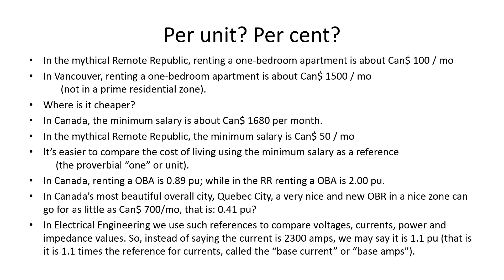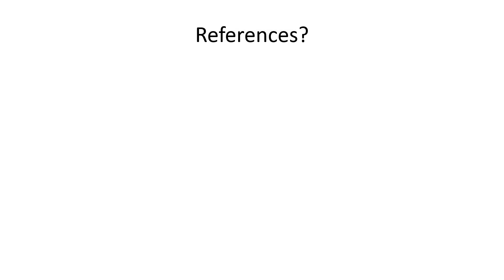So instead of saying that such and such current is 2,300 amperes, we say instead things like the current is 1.1 in per unit. That is 1.1 times the reference chosen for currents. The reference is also called the base current or base amps. But the question is how do we choose the reference values for volts, amps, watts and ohms?